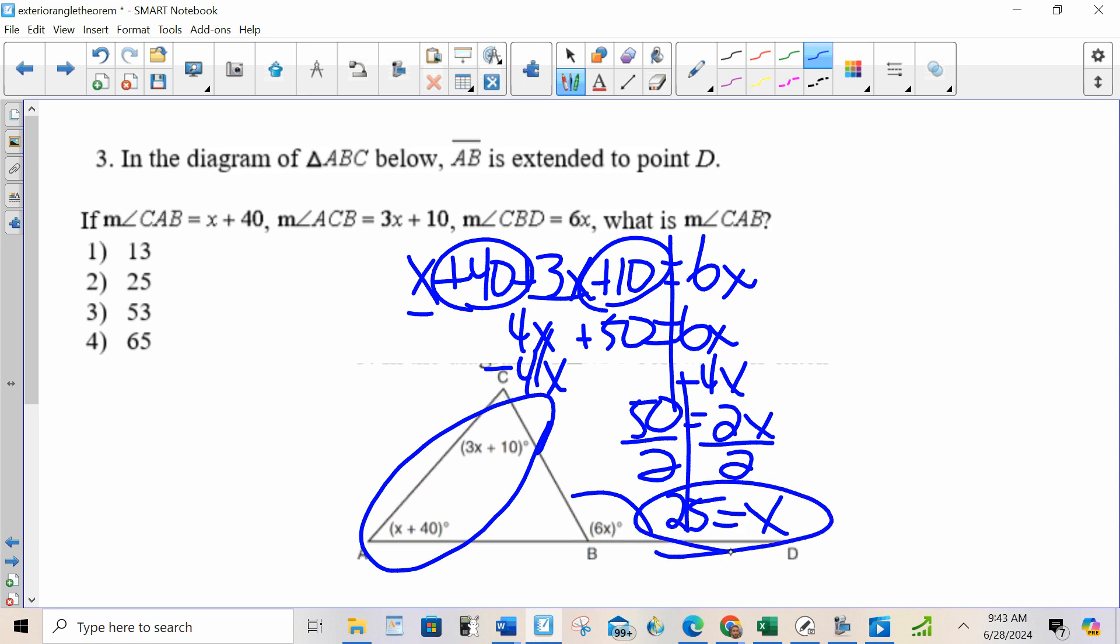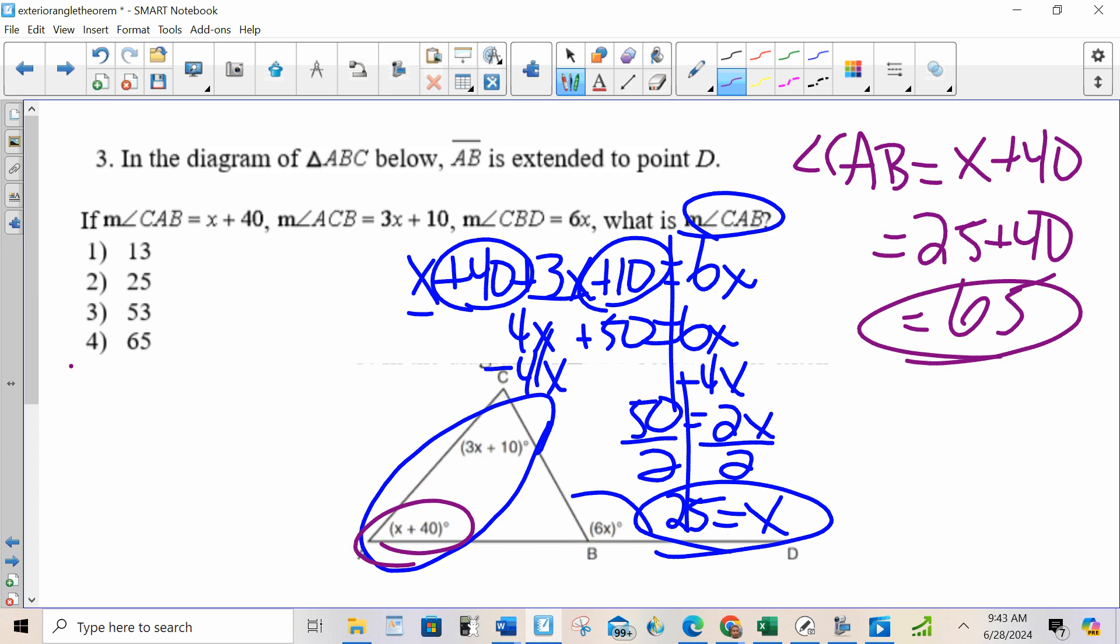Now, what's it asking for? It's asking for angle CAB. Well, angle CAB is equal to X plus 40. The exterior angle is equal to the sum of the two non-adjacent interiors. By non-adjacent, the ones not touching.